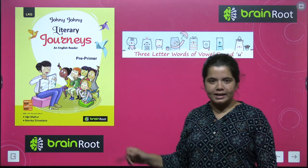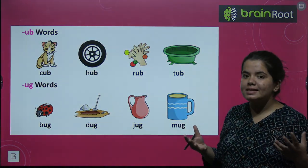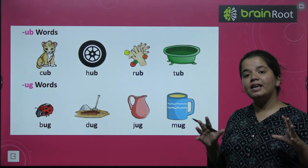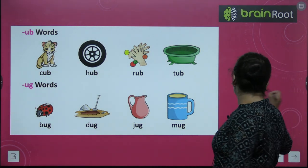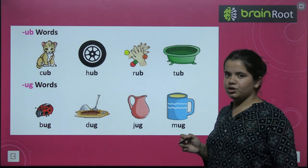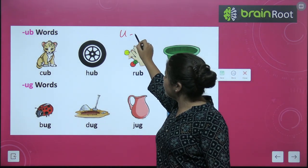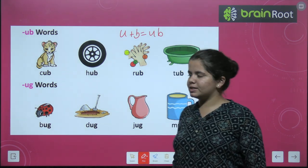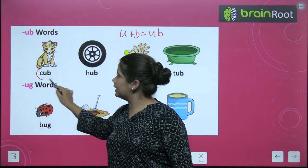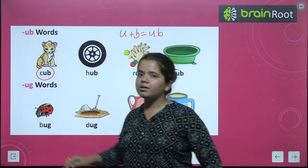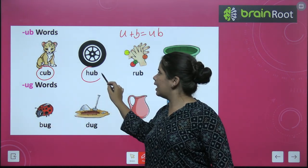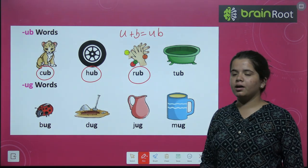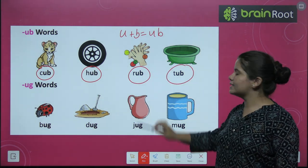So we will have three letter words — U sound words. The first set: P-U-B, cub. R-U-B, rub. T-U-B, tub.